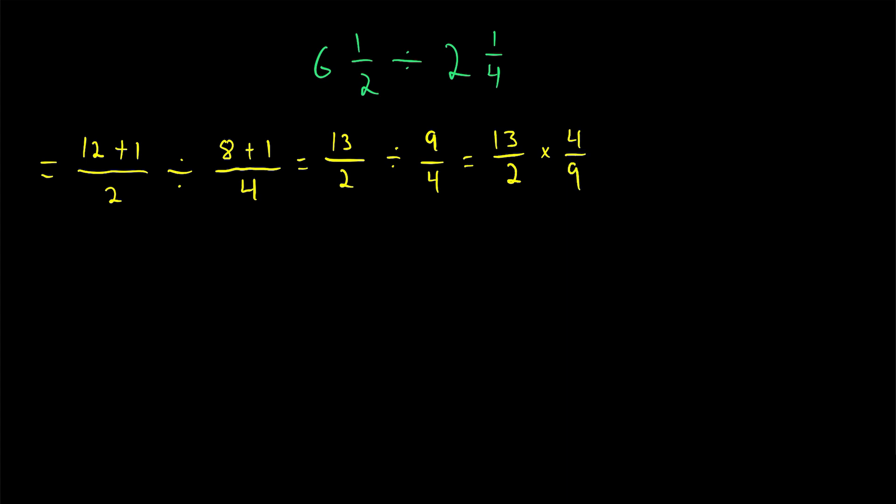To quickly explain why that is, let's rewrite this division in fraction form. We could rewrite it as (13/2)/(9/4). Remember, if you multiply a fraction by another fraction that happens to be equal to one, the value of the fraction doesn't change because you just multiplied by one.